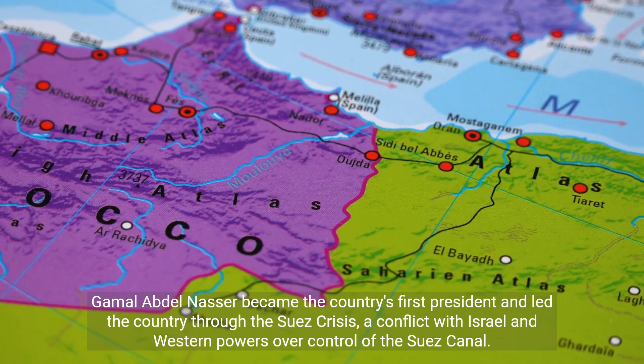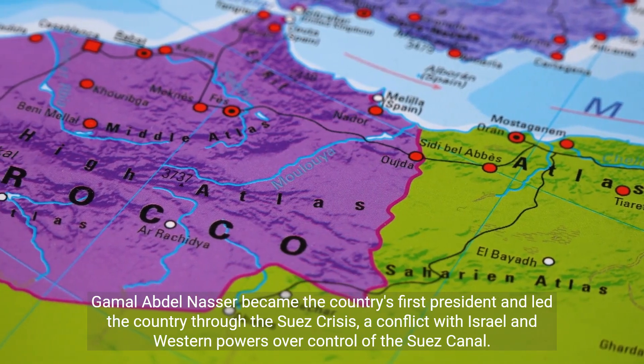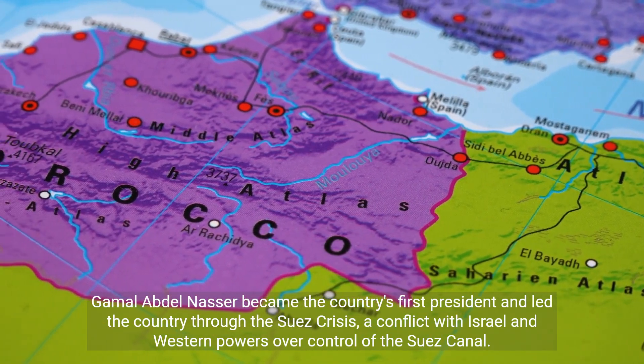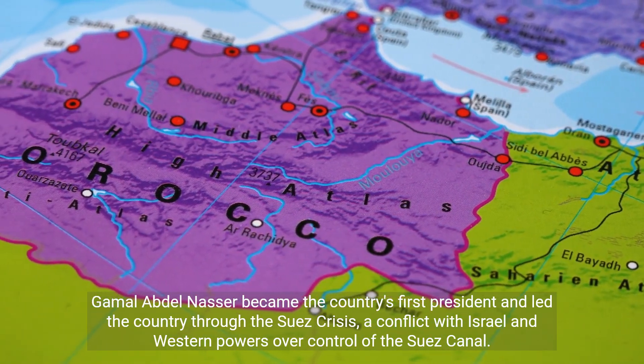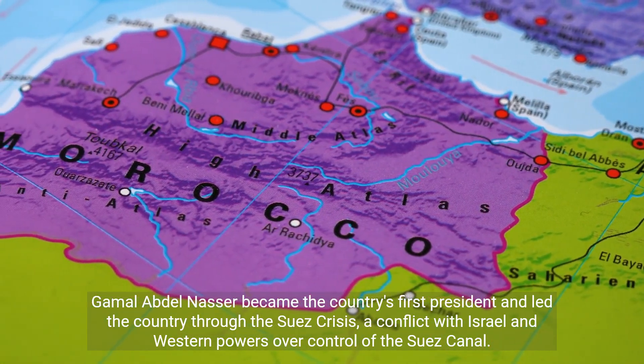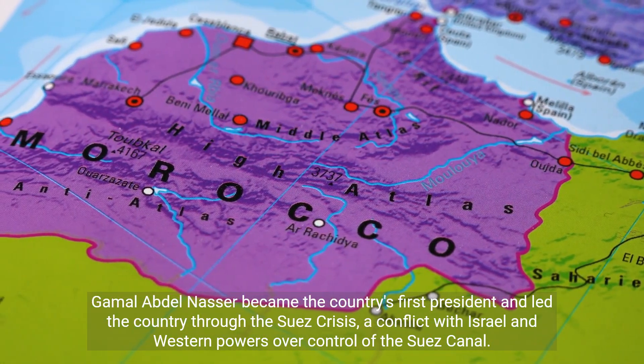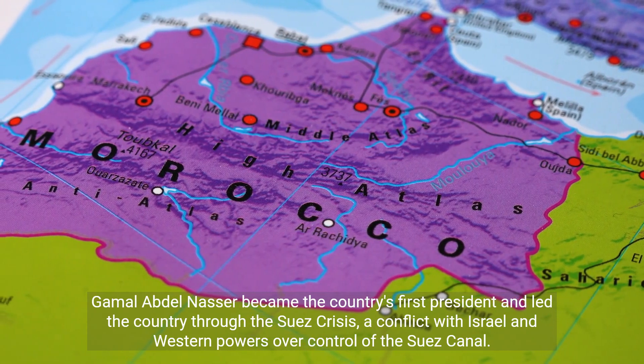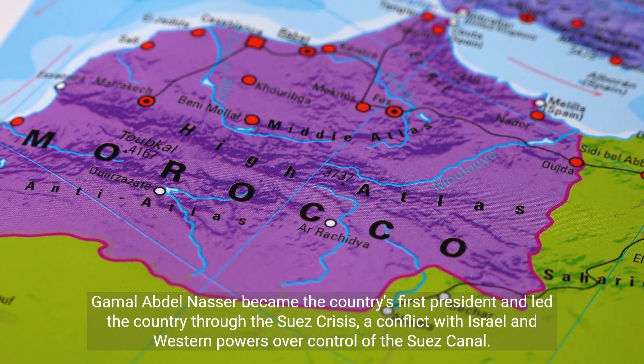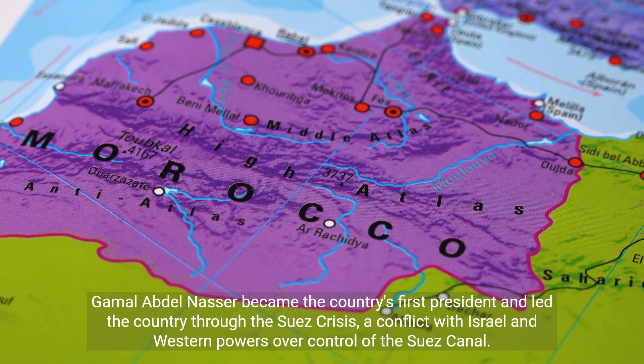Gamal Abdel Nasser became the country's first president and led the country through the Suez Crisis, a conflict with Israel and Western powers over control of the Suez Canal.